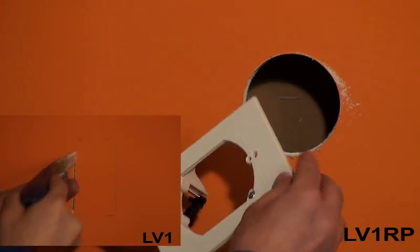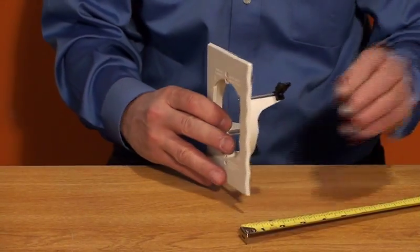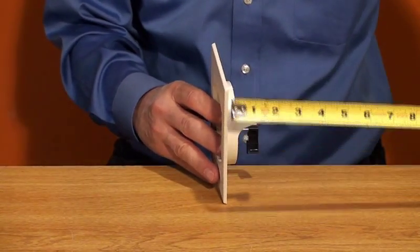The new and improved LV-1RP fits walls from a quarter to one and a half inches thick, where LV-1 fits only up to a one-inch thick wall.